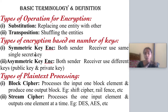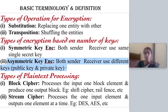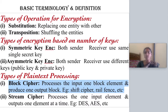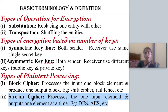Based on the number of keys used, you can divide cryptography into two flavors. The first is symmetric key encryption, where the sender and the receiver use only one key. The second is asymmetric key encryption, where the sender uses a different key and the receiver uses a different key for encryption and decryption. Based on the processing of plain text, cryptography systems are divided into block cipher — where you input a block of multiple elements for processing — and stream cipher, where you process only a single element at a time.